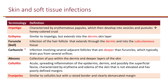A carbuncle is an infection involving several adjacent follicles that are deeper than a furuncle, typically draining pus from several orifices. An abscess is a collection of pus within the dermis and deeper layers of the skin. Cellulitis is an acute spreading inflammation of the epidermis, dermis, and possibly the superficial fascia, characterized by erythema and edema of the skin that is not elevated and has poorly defined margins. Erysipelas is similar to cellulitis but with a raised border and clearly demarcated margin.